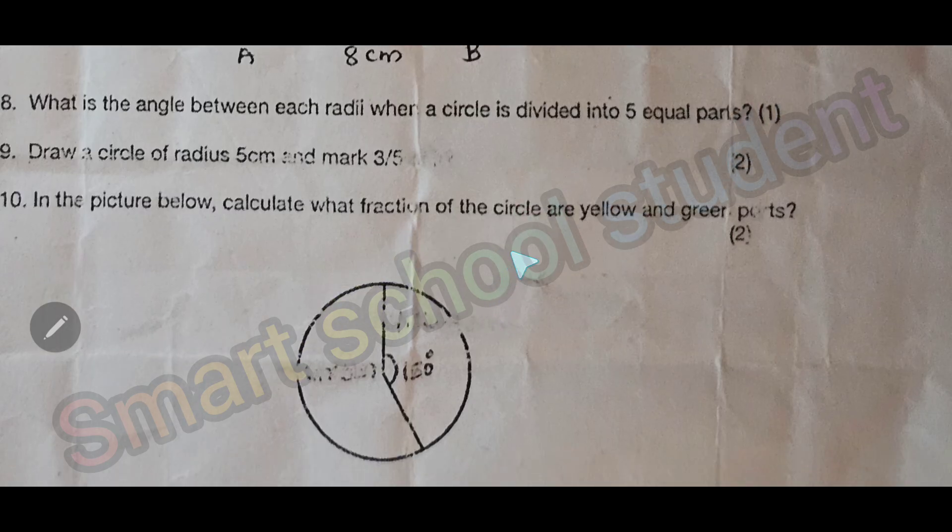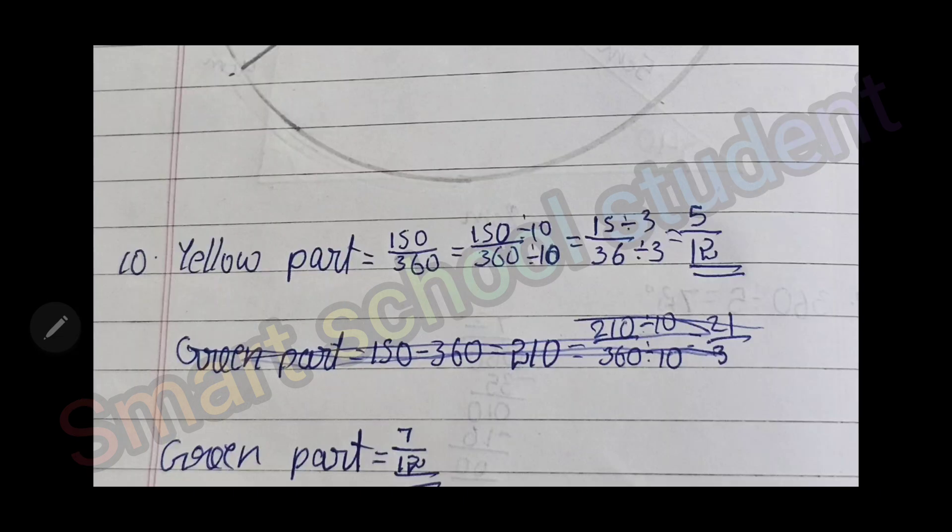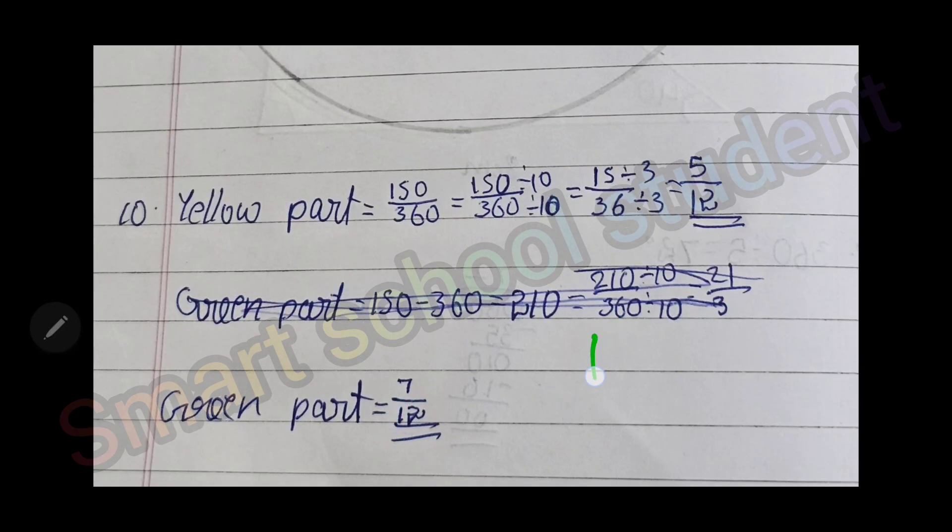Last question, in the picture below calculate which fraction of the circle are yellow and green parts. The yellow part is 150 degrees, so the fraction is 150 divided by 360, we will get the answer as 5 by 12. For the green part, we will get 1 minus 5 by 12, which gives 12 divided by 12 minus 5 divided by 12, so the answer is 12 minus 5 is 7, 7 divided by 12 is the answer.